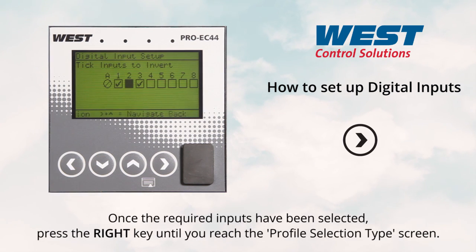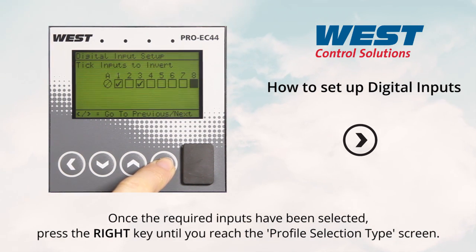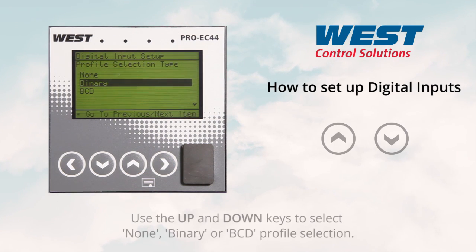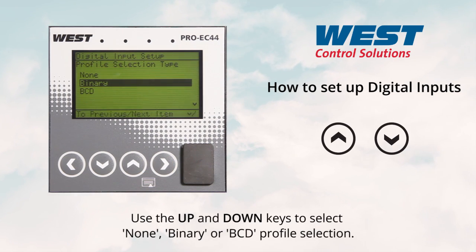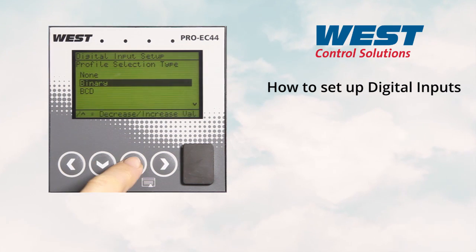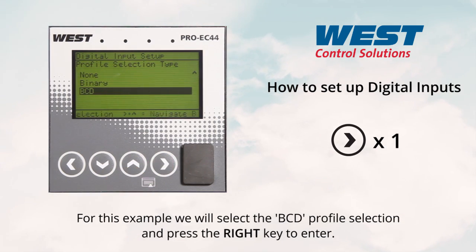Once the required inputs have been selected, press the right key until you reach the profile selection type screen. Use the up and down keys to select none, binary, or BCD profile selection. For this example, we will select the BCD profile selection and press the right key to enter.